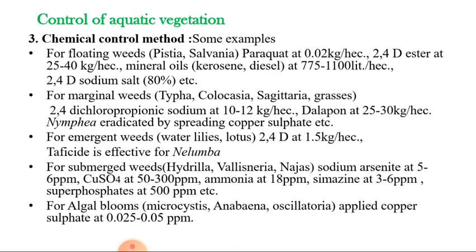For marginal weeds like Typha and Sagittaria, we can use 2,4-dichloropropionic sodium at 10 to 12 kg per hectare, or Dalapon at 25 to 30 kg per hectare. For Nymphaea-like weeds, copper sulfate can be spread over the water surface. For emergent weeds, 2,4-D at 1.5 kg per hectare is effective. Taphysite is also effective for Nelumbo (lotus).